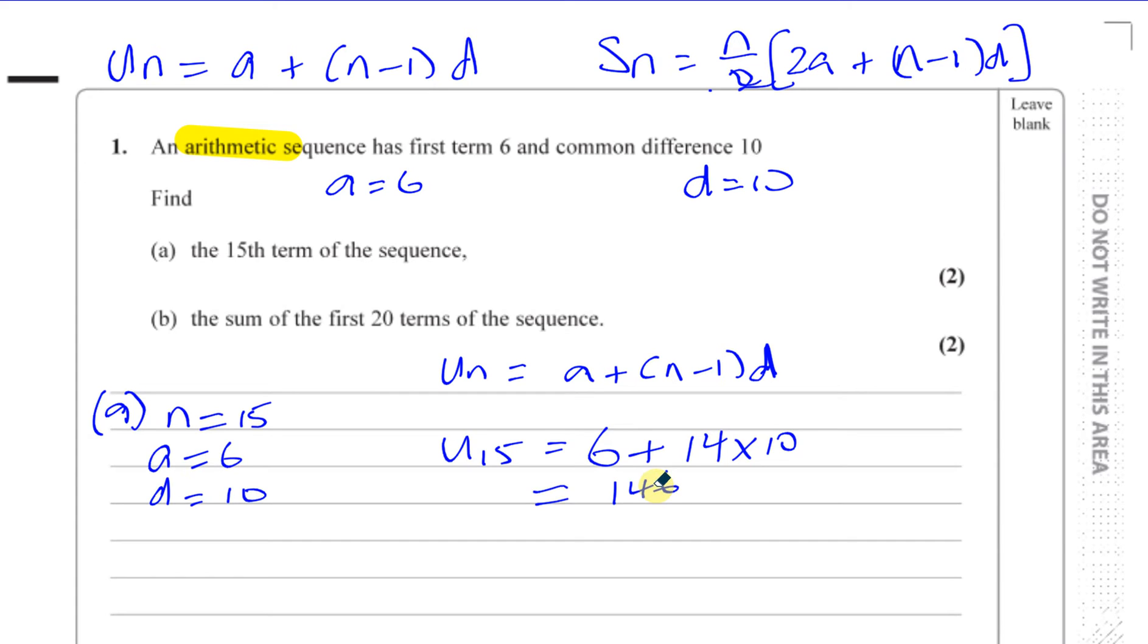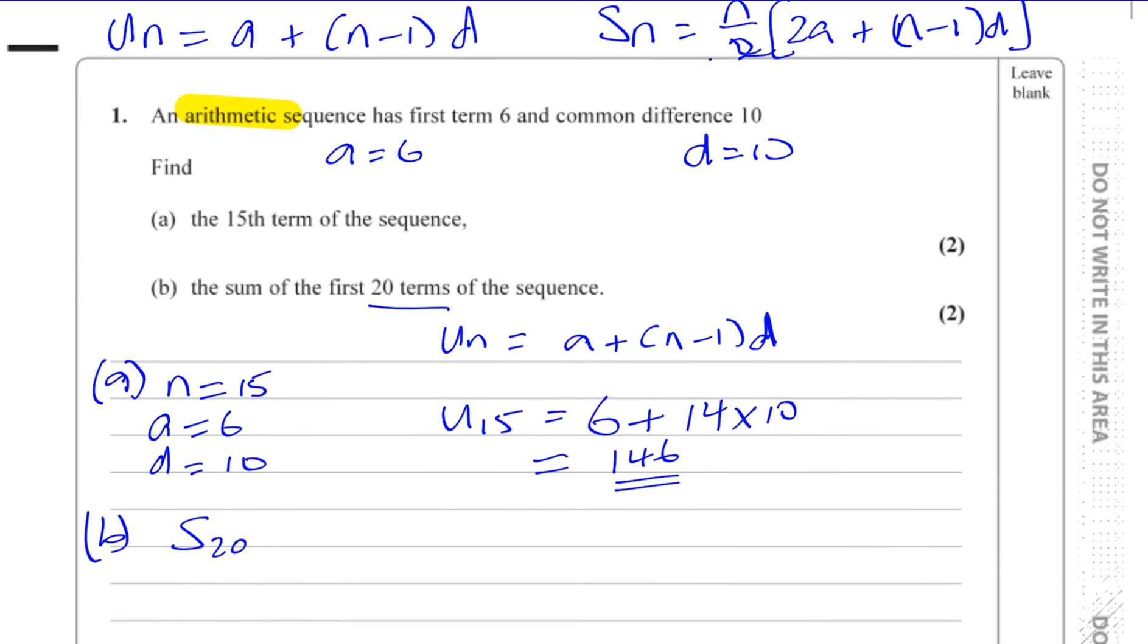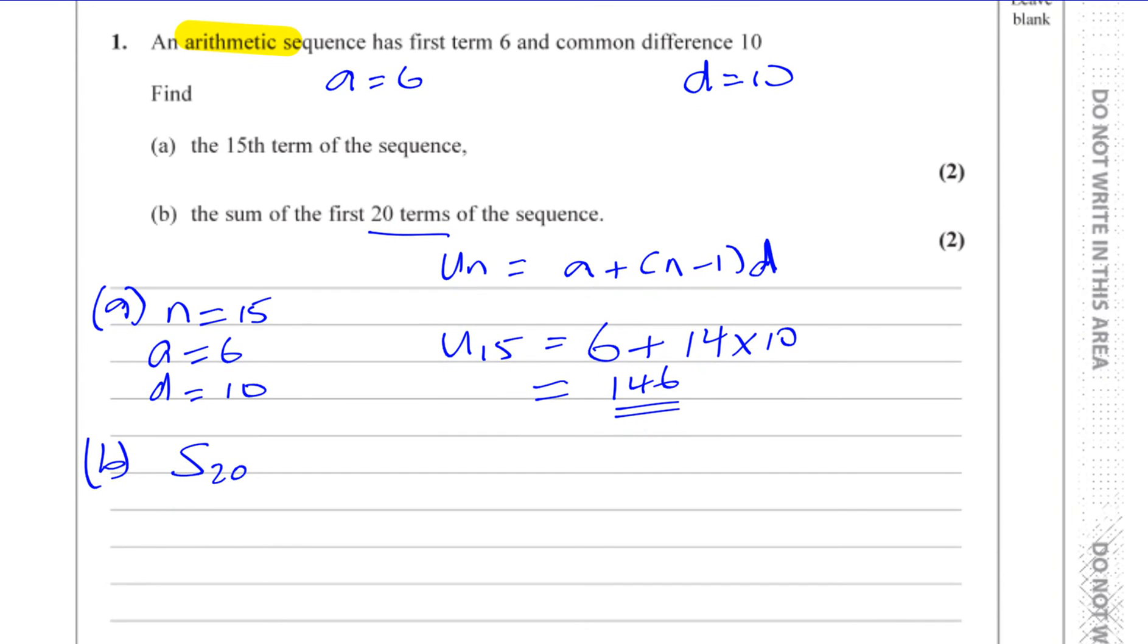That's the answer for question part a. Now part b, we want to find the sum of the first 20 terms. So we've got to find S20. And we know in this question, again, a equals 6 and d equals 10.